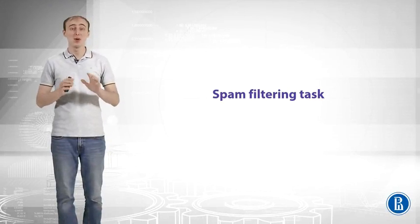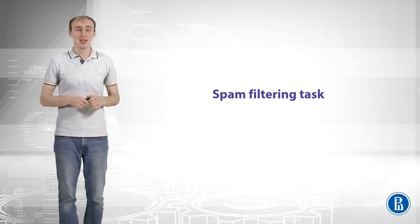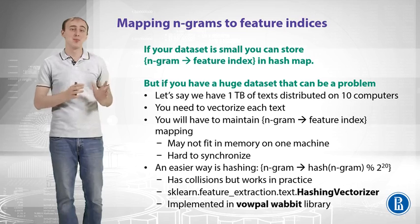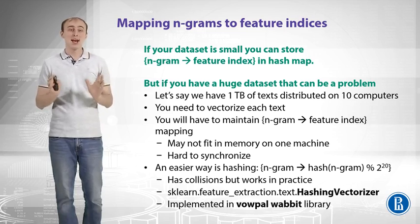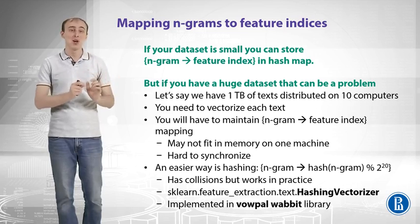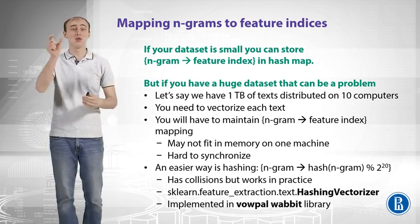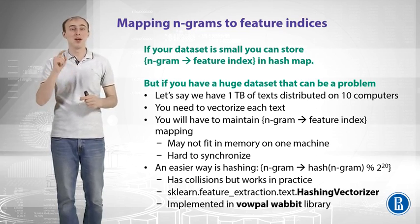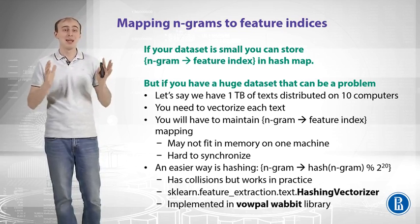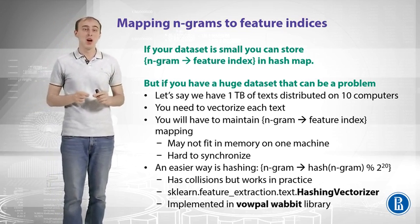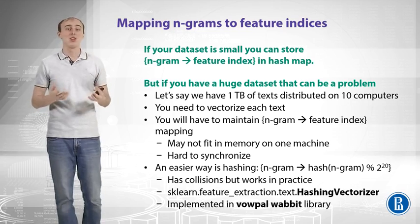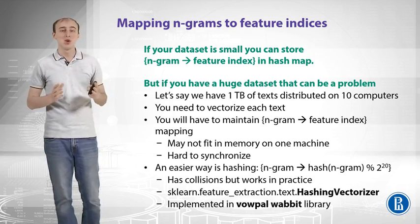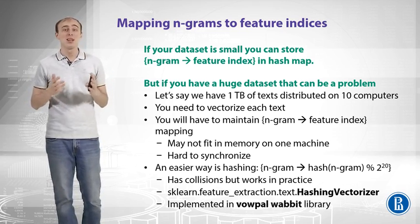In this video we will talk about a spam filtering task. When we want to use bag-of-words representation, we need for every n-gram of our text to find the feature index — the column where we input the TF-IDF values. For that purpose we need to maintain the correspondence from n-gram to feature index, and usually you use a hash map or a dictionary in Python. But let's assume that your data set is huge, and that's where it can become a problem.